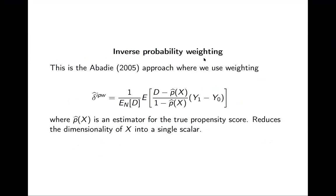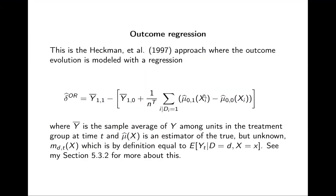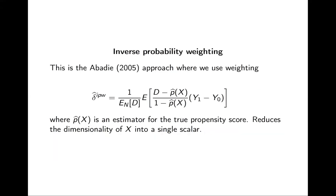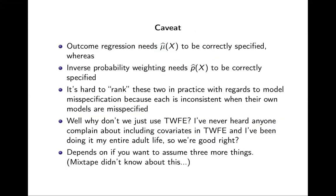Both of these assume that you fit that regression model correctly. Outcome regression needs to be correctly specified if you're going to use the Heckman approach; inverse probability weighting needs to be correctly specified if you're going to use the Abadie 2005 method. You can't really rank them - each is inconsistent when its own model is misspecified; they're just different methods.